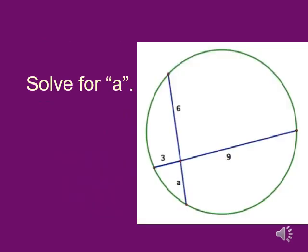So our problem here says solve for A. And again, we've got things that are labeled 6, 3, 9, and A. And the big thing is you've got to always multiply what's on the same chord. So here, 6 times A equals 3 times 9. 6A equals 27. If you divide, A's got to be 4 and a half, 4.5.